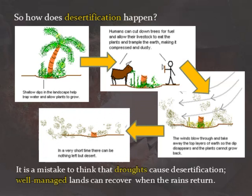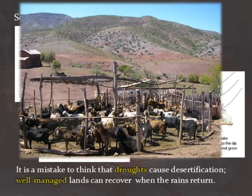In a very short time, all of the good soil could be blown away and there is no way the plants can grow back. It's a mistake to think that droughts cause this — it's not something that only happens in years where there is no rain. If you manage your lands well, these places can recover when the rains return.